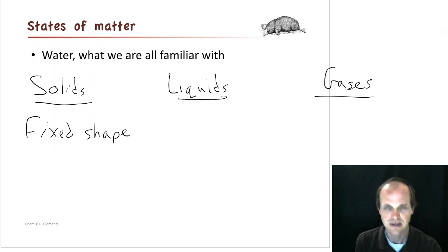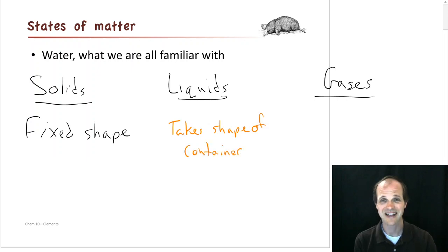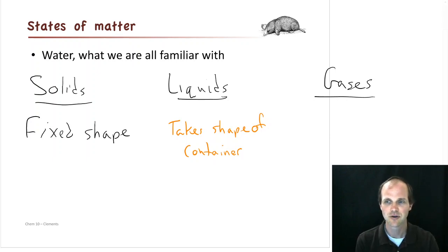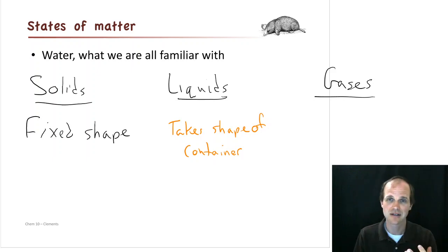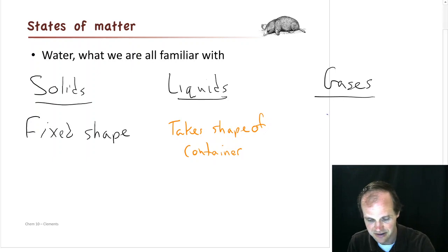What about liquids? If you take a liquid and put it into a container, it takes the shape of the container. What about a gas? A gas is a little hard to think of because we can't generally see gases. But if you take a balloon and squeeze it and move it around, the gas fills the balloon no matter what shape it is. So a gas also takes the shape of its container.